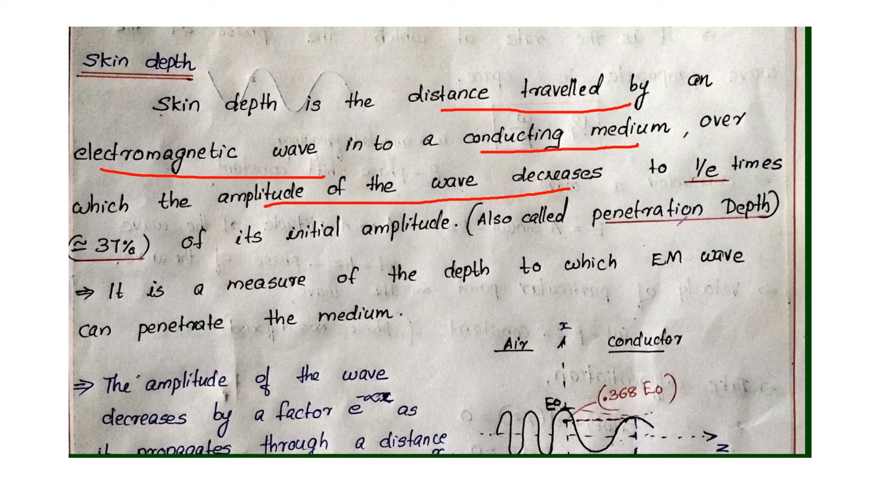This is also called penetration depth or depth of penetration. Skin depth is the distance from a conducting medium over which the amplitude of the wave decreases to 1 by e times of its initial amplitude.